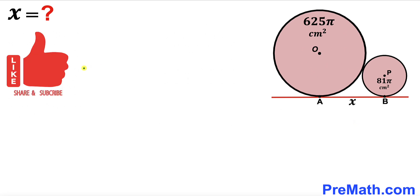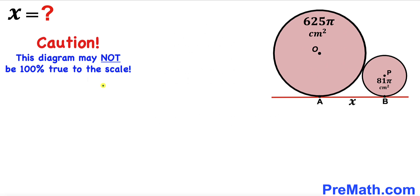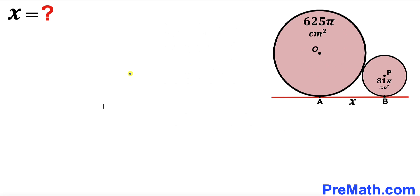Please don't forget to give a thumbs up and subscribe, and keep in mind that this figure may not be 100% true to scale. Let's get started. We'll label the radius of the larger circle as uppercase R and the radius of the smaller circle as lowercase r.